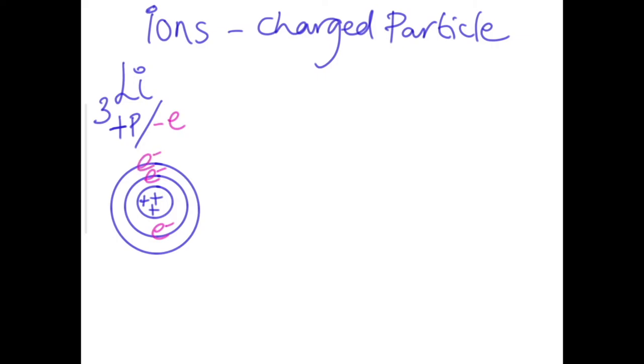All right, here at the moment, if you look at this atom, what you've got is three positives, cancelled out or balanced by three negatives. Okay, so let's turn this into an ion.